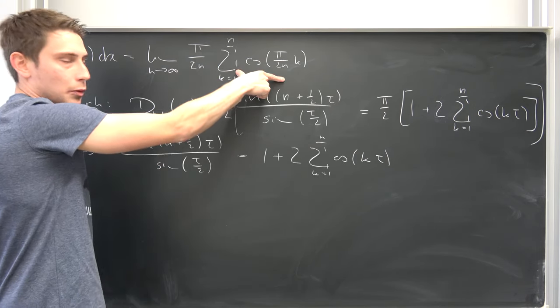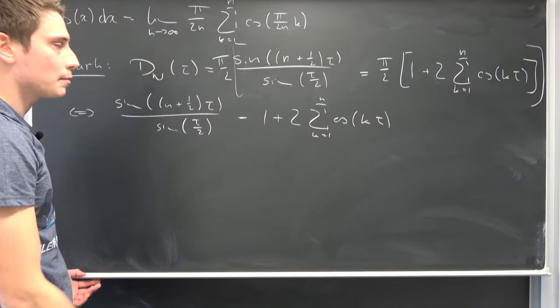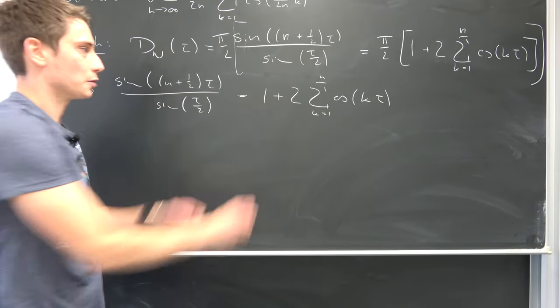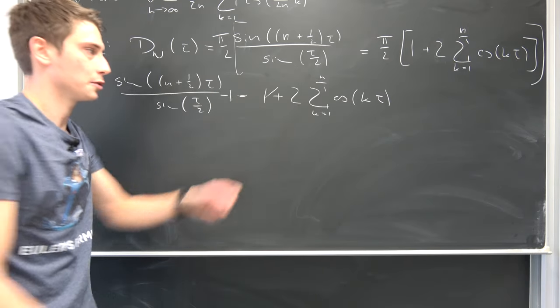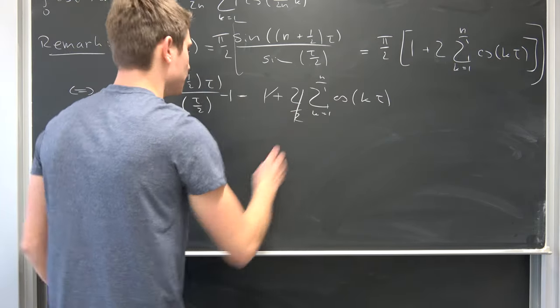So we want to get to this thing right here by subtracting 1 on both sides to get rid of this thing, and then divide both sides by 2 to get rid of this 2 right here.